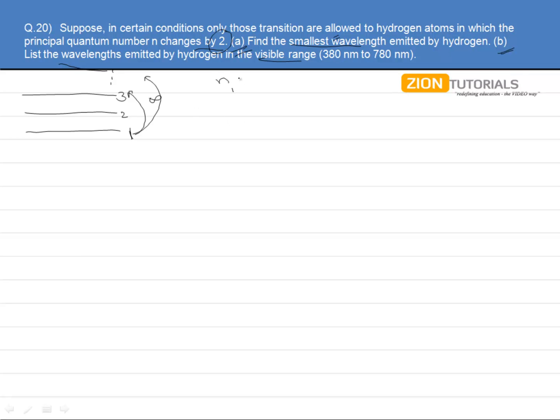So that is the same thing. We are having N1 to be 1 and N2 to be 3. So the energy is equals to 13.6 Z square by N square.